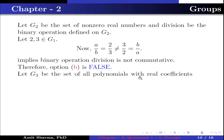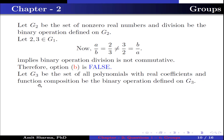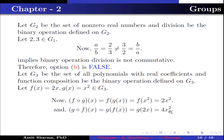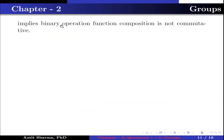Let G3 be the set of all polynomials with real coefficients and function composition be the binary operation defined on G3. Let f(x) = 2x and g(x) = x² belong to G3. Now f(g(x)) = f(x²) = 2x², and g(f(x)) = g(2x) = 4x². This implies f∘g ≠ g∘f, so binary operation function composition is not commutative. Therefore option C is false.